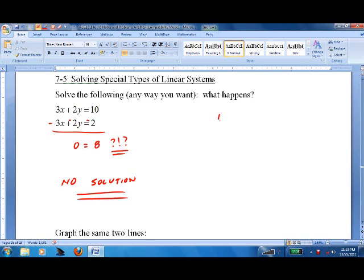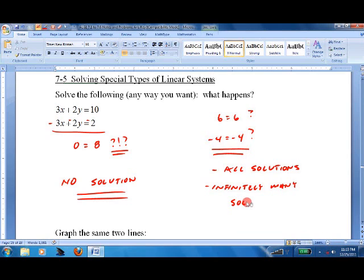If we got something like 6 equals 6, or negative 4 equals negative 4, that would be an all solutions. Or, the way it's written in this unit, infinitely many solutions. We'll talk about that in a second.